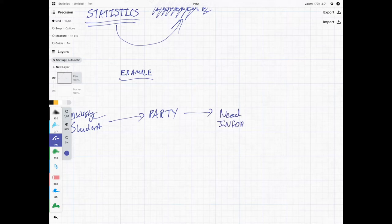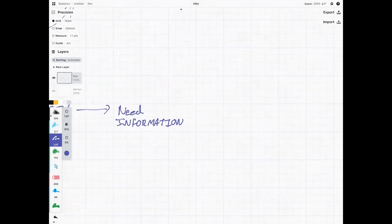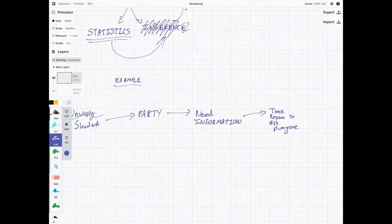You know, we want to know, do people actually want to have a party? What type of party do they want? When should the party be? But to get this information, we don't have the time or the resources to ask everyone. So what do we do in this situation? We need the information, but it's going to be quite expensive to obtain all of this information.